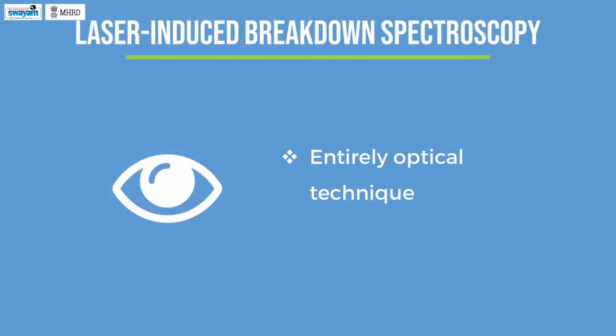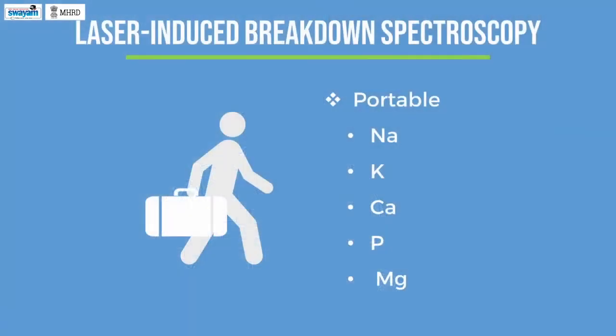Since LIBS is an entirely optical technique, we can analyze samples even without touching them, just by focusing the laser onto the sample. Additionally, a LIBS system can be coupled to an optical microscope for mapping elements present in a given sample. Unlike conventional AES techniques, this LIBS instrument is portable and can be used for screening samples for a variety of elements, particularly lighter elements such as sodium, potassium, calcium, phosphorus, and magnesium.